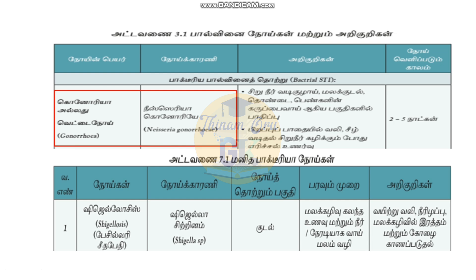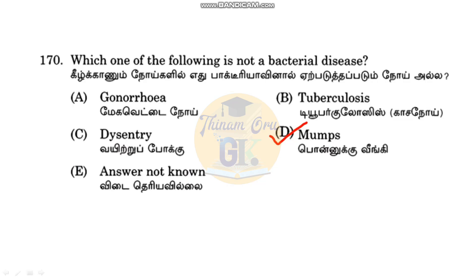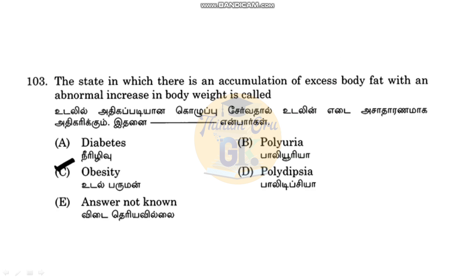Shigella species is one of these bacterial diseases. These three — tuberculosis, dysentery, and gonorrhea — are bacterial diseases. Mumps is the viral disease in the options.